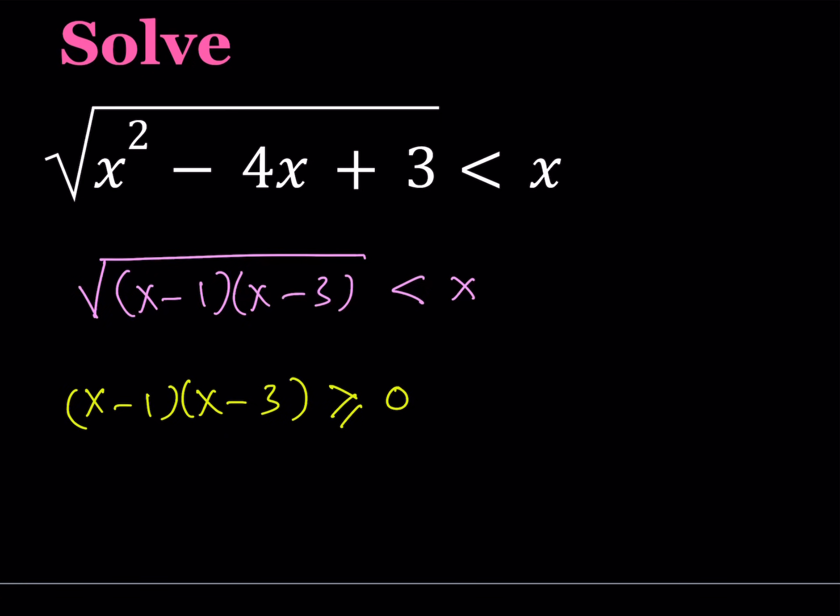And of course, since my original expression, the radical, is less than x, if x is negative or 0, that's going to be problematic because the square root of something has to be greater than or equal to 0. So, in this case, x also needs to be positive. So we have two conditions. We're going to be solving those first. But this doesn't solve the inequality. It just gives us some information about the domain.